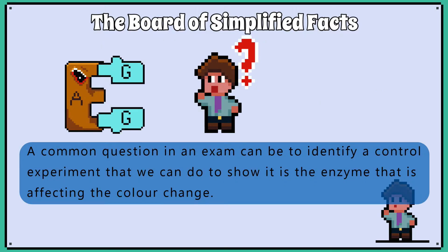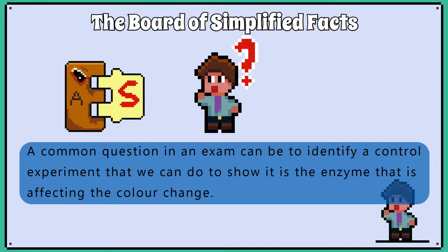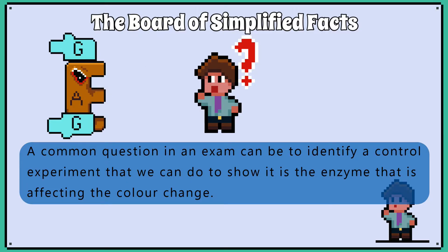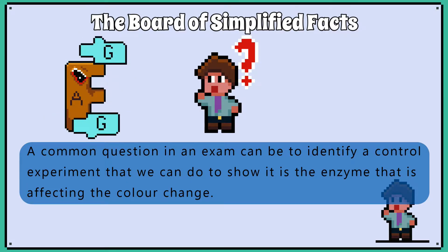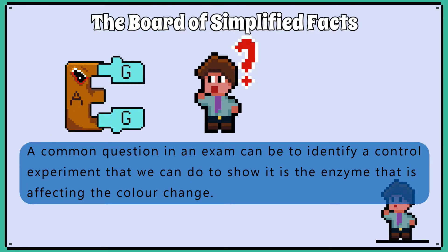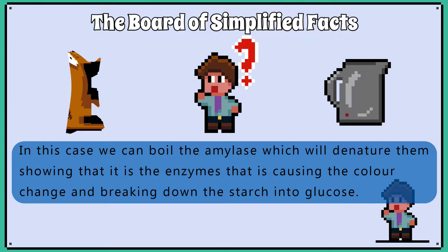A common question in an exam can be to identify a control experiment that we can do to show which is the enzyme that is affecting the colour change. In this case, we can boil the amylase, which will denature them, showing that it is the enzymes that is causing the colour change and breaking down the starch into glucose.